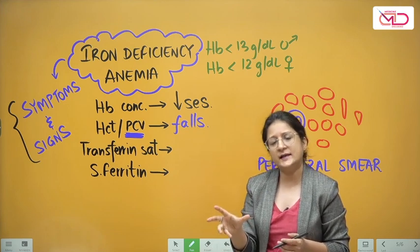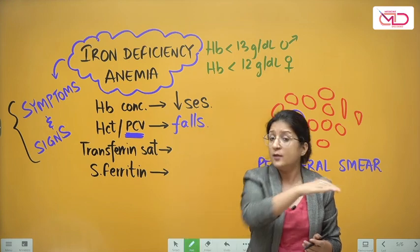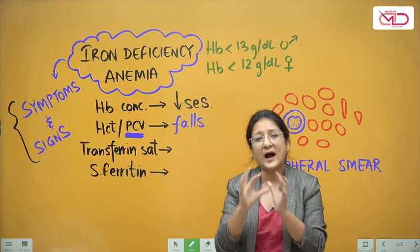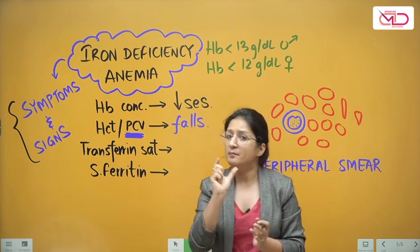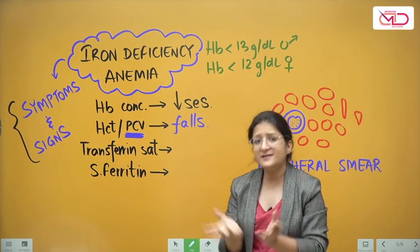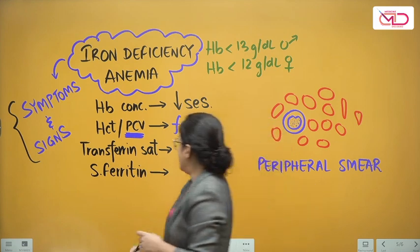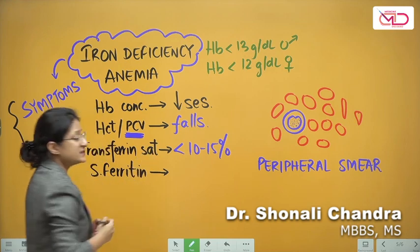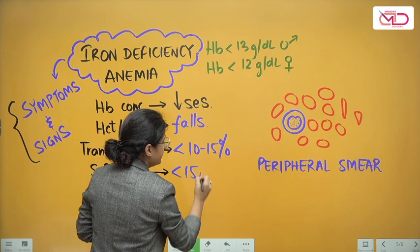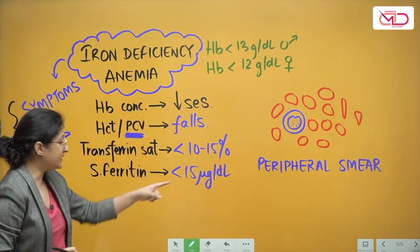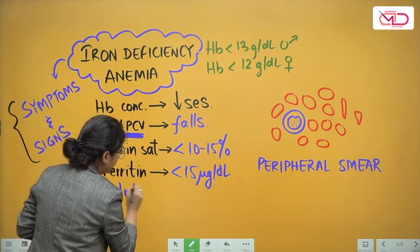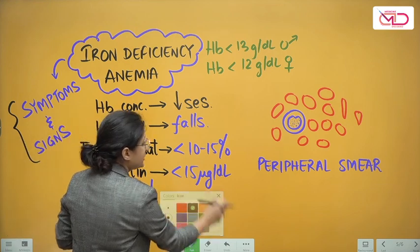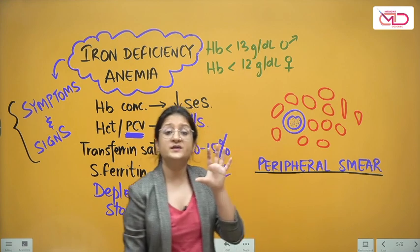In mild to moderate iron deficiency anemia, the RBC count is usually not affected in initial stages. In prolonged, severe, and later stages, the bone marrow can enter a hypoproliferative stage and RBC count may get affected. At the frank anemia stage, transferrin saturation is less than 10–15%, and serum ferritin is less than 15 micrograms per deciliter, meaning stores have been completely depleted.